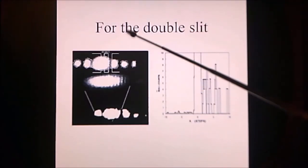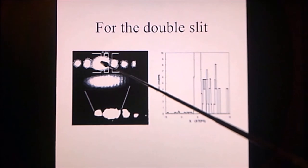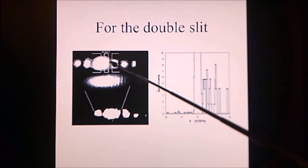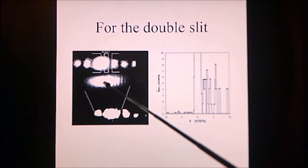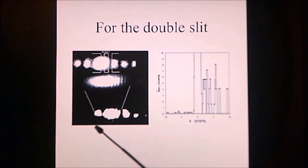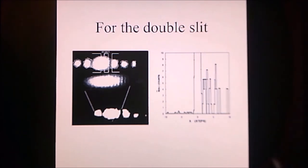For the double slit, we position one slit over the central peak maxima and the other slit over the first minima. When I change the camera exposure, we can see that the central peak has the interference fringes. Change the exposure back so it's detecting the secondary peaks and you see that they are there also. This is the simulation. Central peak, interference fringes, secondary peak. Wave models of light predict the brighter diffraction pattern should be on the left rather than on the right or spread across both sides of the screen. Therefore, this experiment rejects wave models of light.